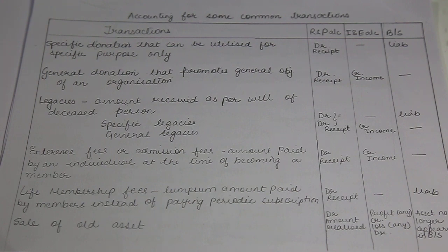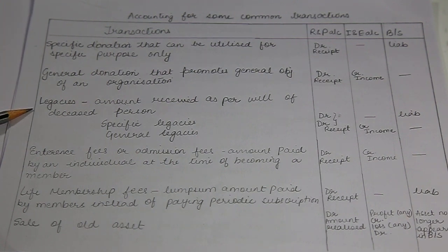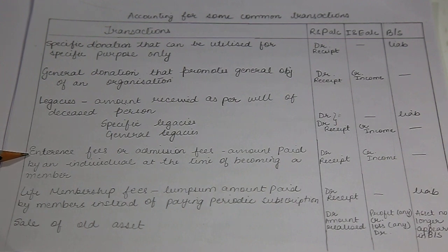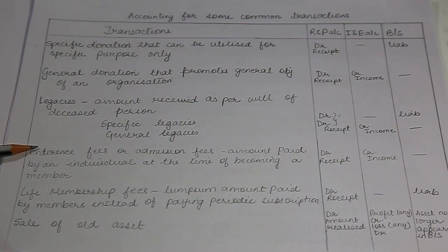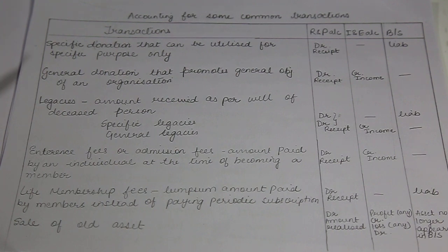In this tutorial, we are going to go through some important transactions and their accounting treatment in not-for-profit organizations. This is specific to not-for-profit organizations because transactions are also specific here. For example, donations, legacies, or entrance fees are not found in normal businesses but are specific to not-for-profit organizations. Let us start with donations.